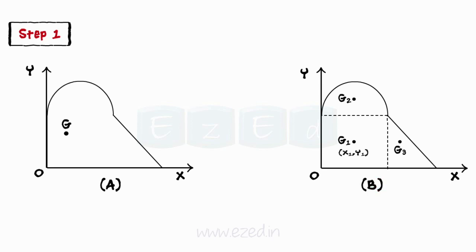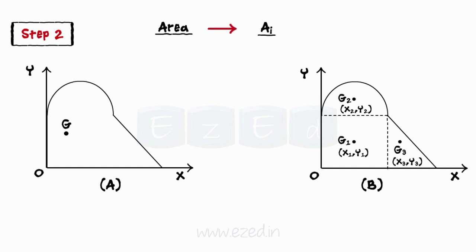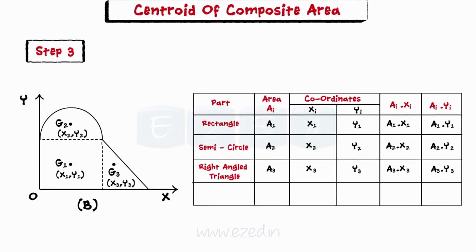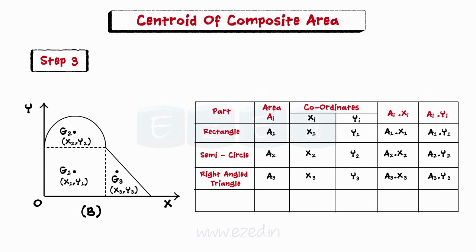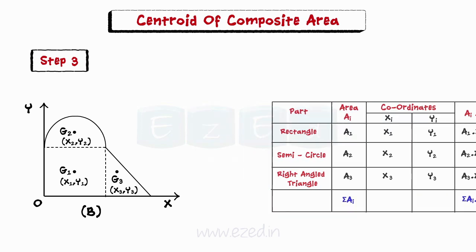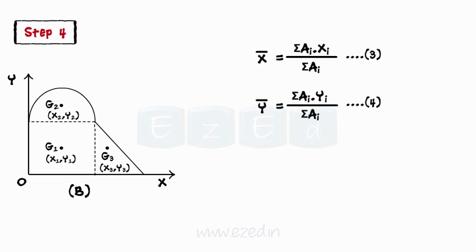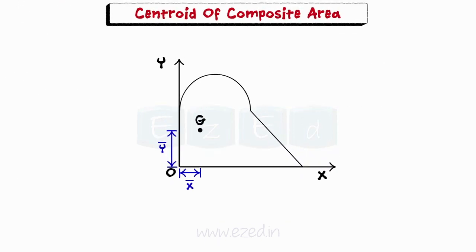Then find their coordinates with respect to the given axis, i.e., OX and OY. Let the area of a regular part be Ai, and the coordinates are Xi and Yi. Tabulate the values as shown. The table includes the data of each of the parts required to find the centroid of the entire area. Add up the areas of the different parts to get the total area. Add up the product of area and X coordinate of different parts to obtain its summation. Add up the product of area and Y coordinate of different parts to obtain its summation. The coordinates of the centroid of the composite figure can be obtained by using relations 3 and 4 derived previously. Using these steps, we can find the centroid of any composite area.